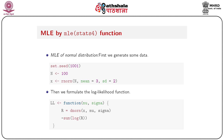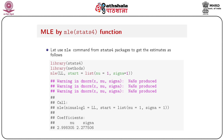Then formulate the log-likelihood function as: `ll = function(mu, sigma) { r = dnorm(x, mu, sigma); return(-sum(log(r))) }`. This defines the negative log-likelihood for the normal distribution.